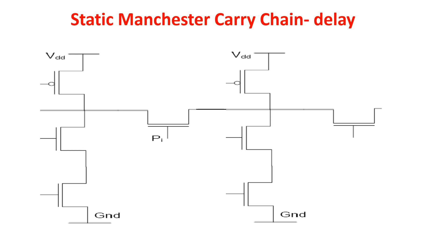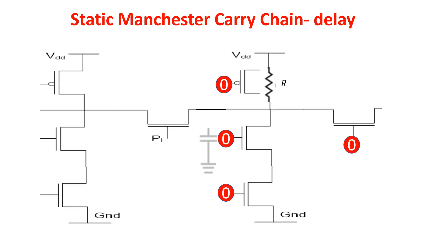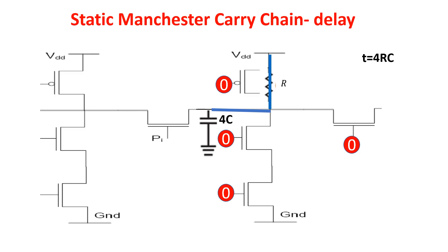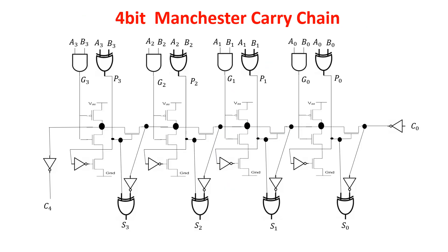Now let's see the delay of this cell. The transistor, when acting as a closed circuit, can be represented by a resistance. At the output node there is a capacitance created by the four transistors connected. We can say this total capacitance is four basic capacitances. The time needed to have the carry out is the time needed to charge the output capacitance through the resistance, so it is 4RC in kill mode. In propagation mode, we can approximate the charging time of the capacitance as 4R2C, with R2 less than R1 as explained before.